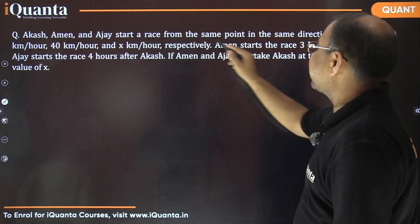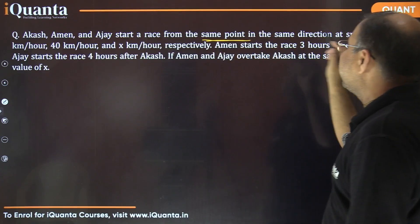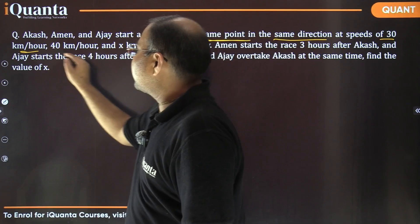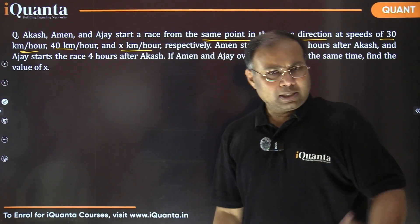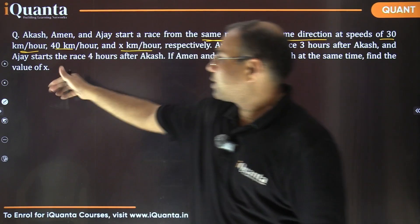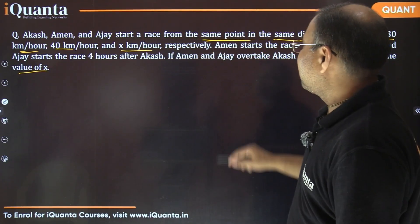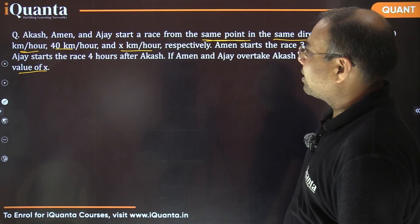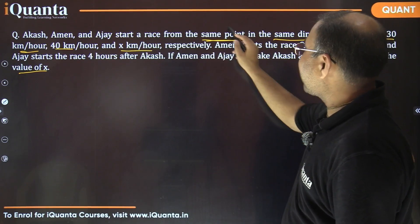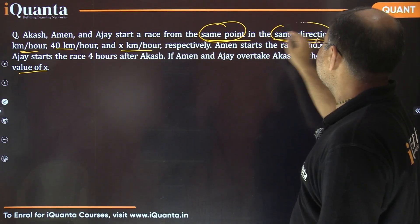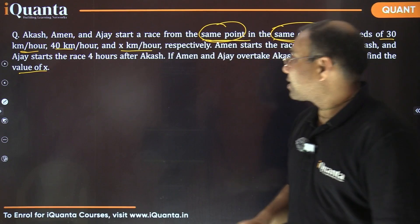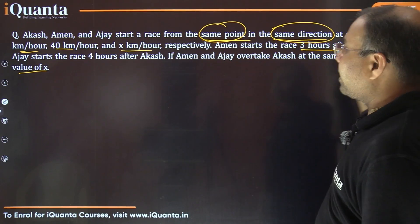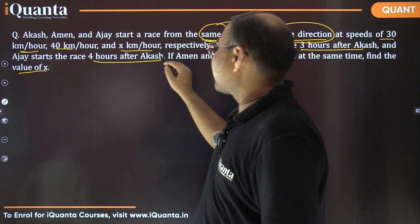Akash, Aman, and Ajay start a race from the same point in the same direction at speeds of 30 km/h, 40 km/h, and x km/h respectively. X is unknown — we need to find its value. Aman starts the race three hours after Akash, so their starting times are different. The starting point and direction of motion are the same, but starting timings differ.